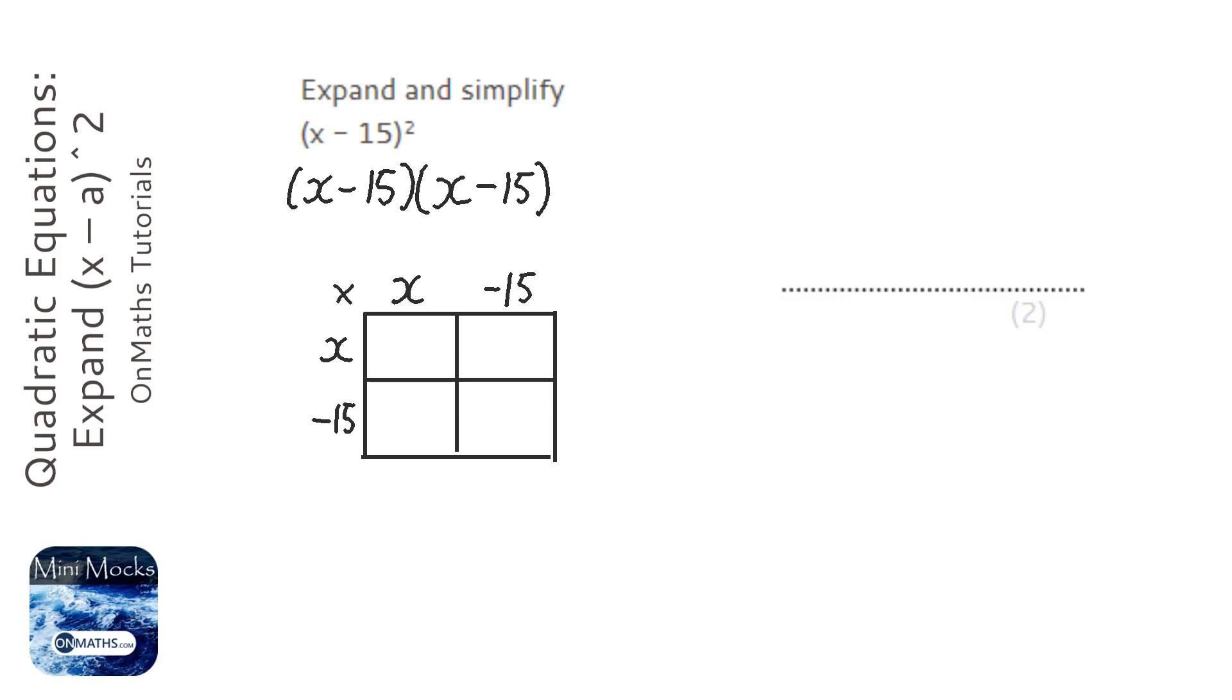We're timesing, so x times x is x squared, x times minus 15 is minus 15x, x times minus 15 is minus 15x, and then minus 15 times minus 15 is plus 225.